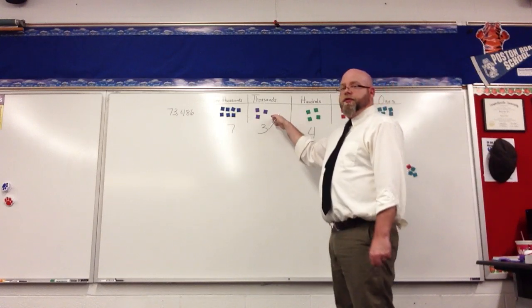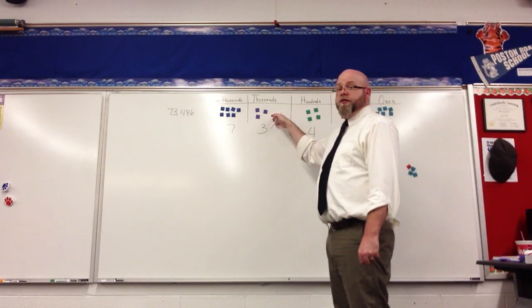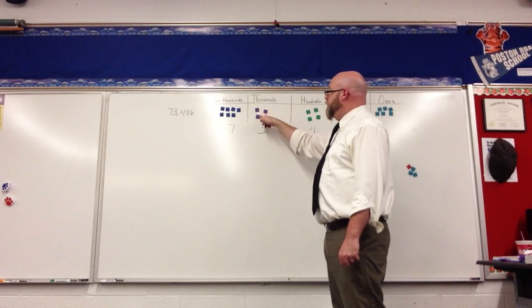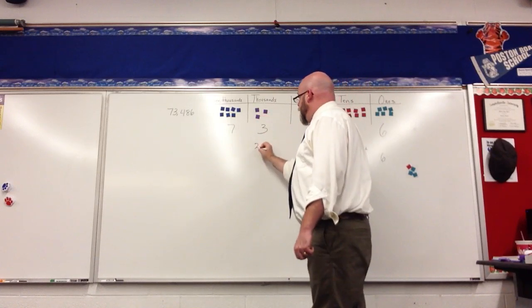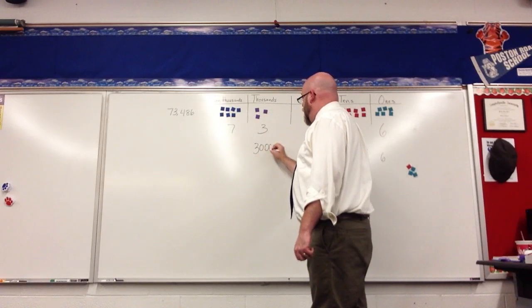Here I have 3 thousands. I count by 1,000 three times: 1,000, 2,000, 3,000.